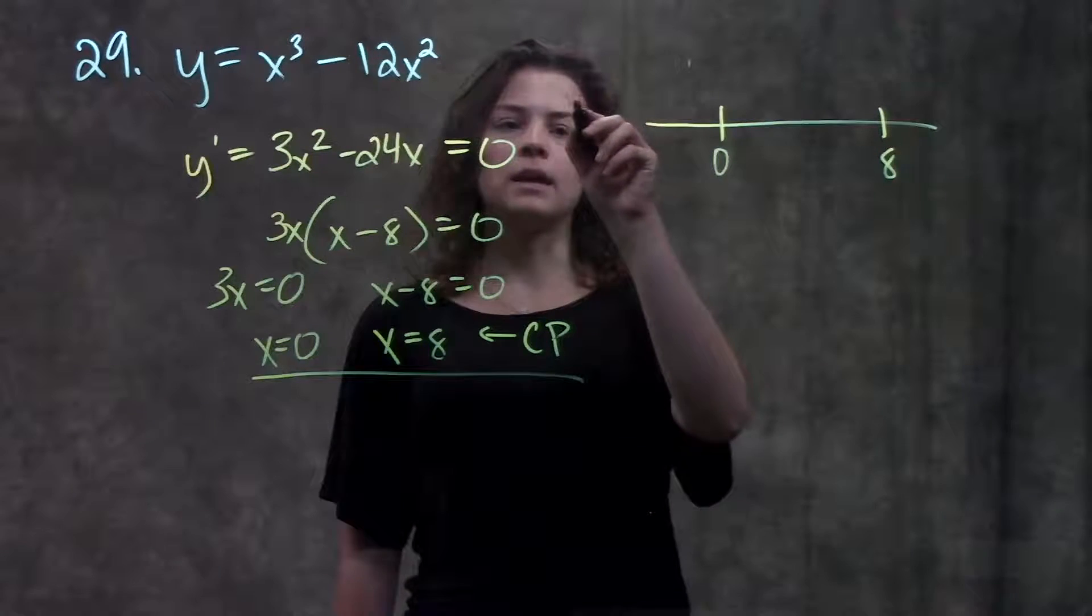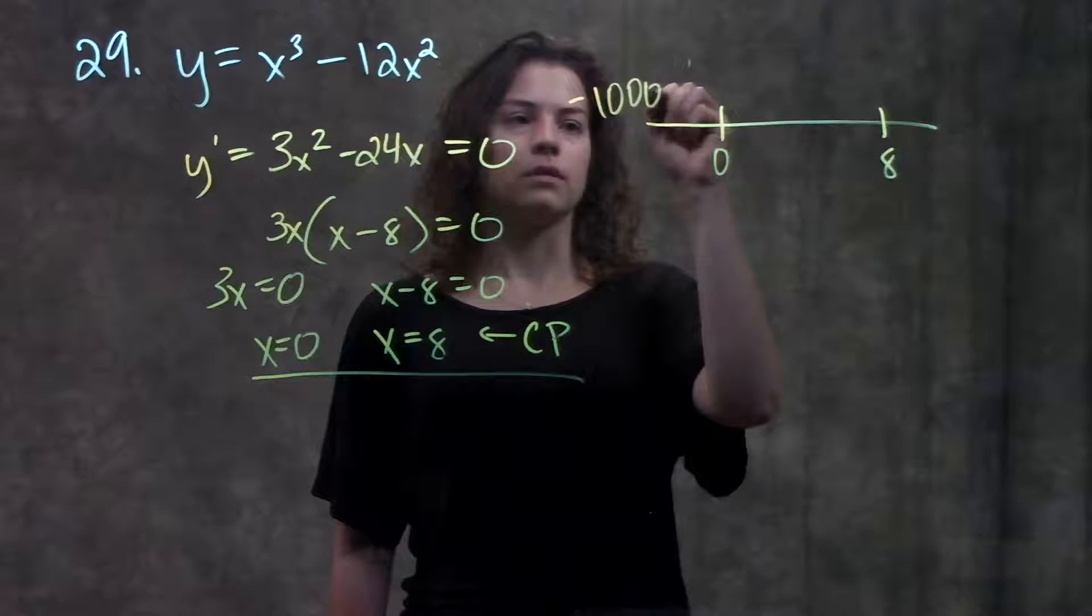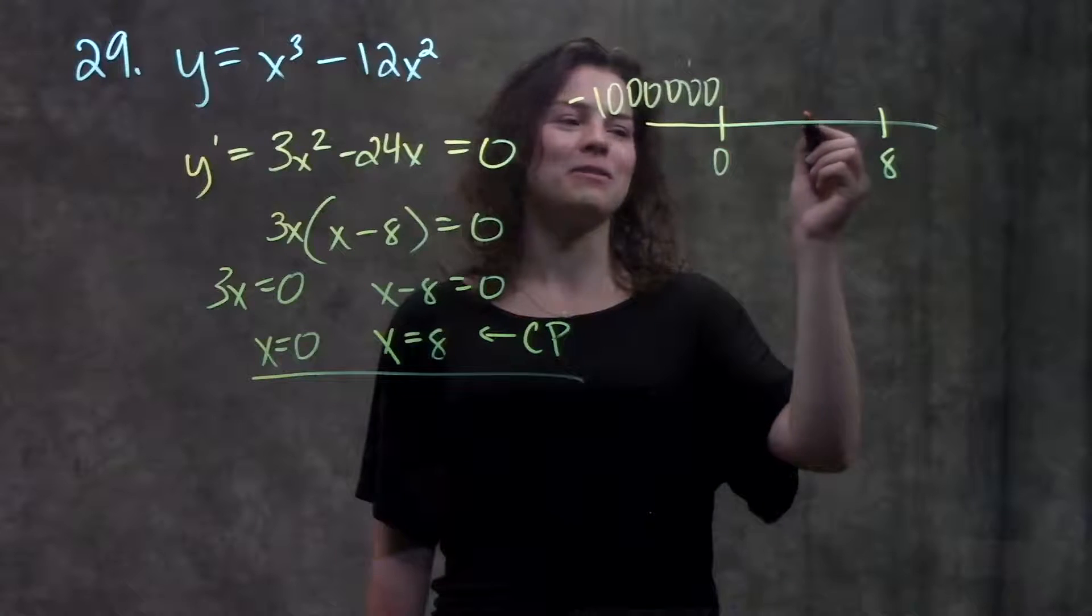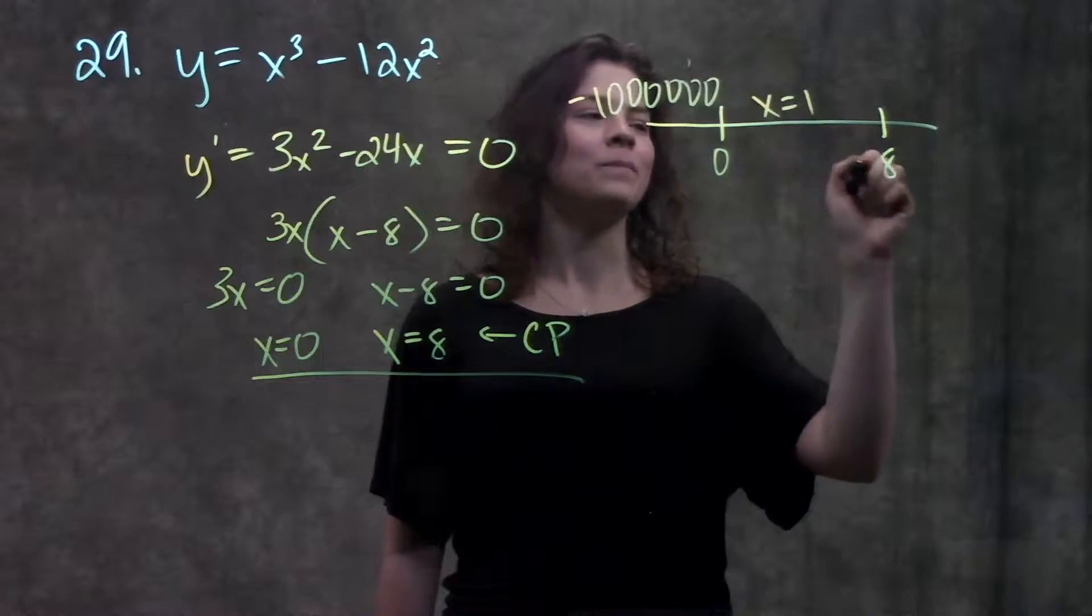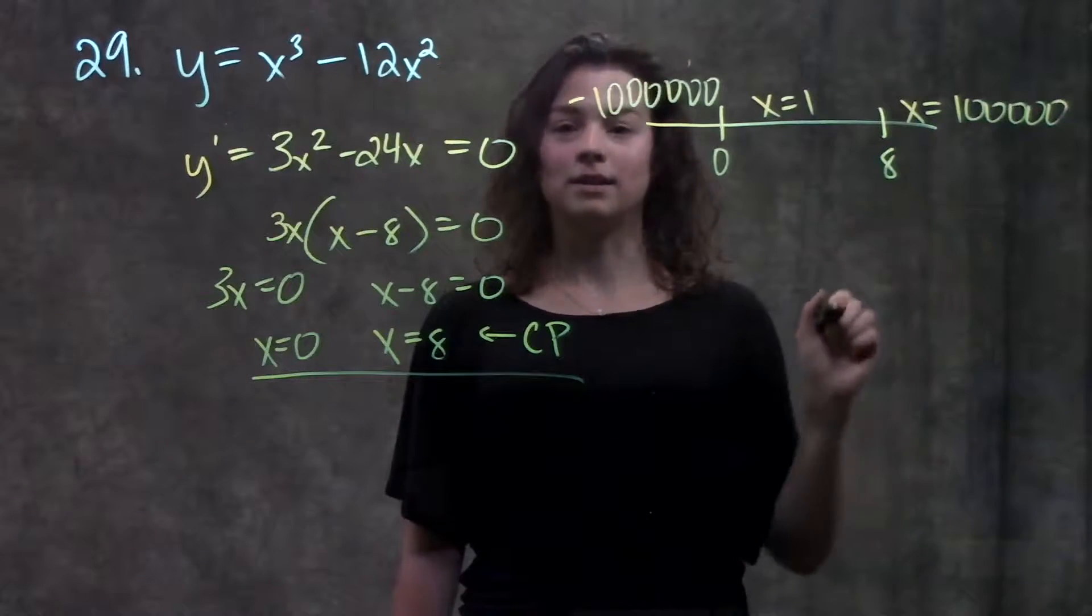Over here, I'm going to plug in some super huge negative number, negative gajillion. Here I'm going to plug in a really easy number, let's just say x equals 1. And over here, I'm going to plug in a super huge positive number, positive a gajillion.